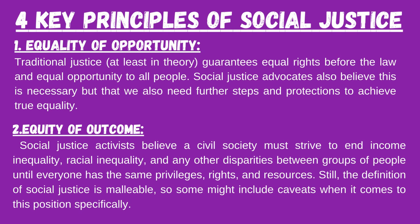Number two: equity of outcomes. Social justice activists believe a civil society must strive to end income inequality, racial inequality, and any other disparities between groups of people until everyone has the same privileges, rights, and resources. The definition of social justice is malleable, so some may include additional considerations when it comes to this position.